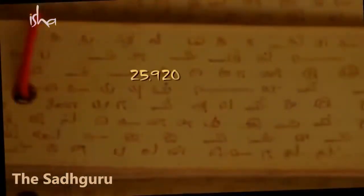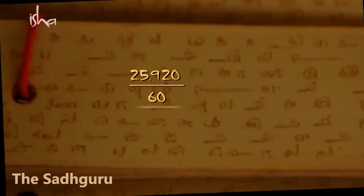This tilt mainly happens because of the gravitational pull of the moon over the Earth, and for it to exert that pressure continuously to get this axis to form a circle, it takes this many years. That many years is called one cycle of the yugas — 25,920 divided by 60, because 60 is the number of minutes.